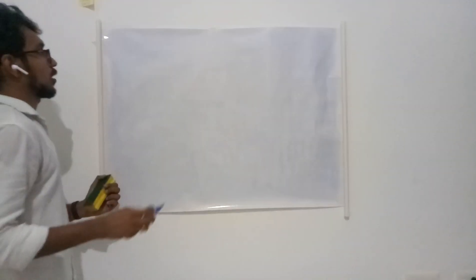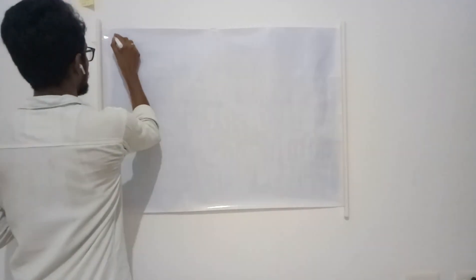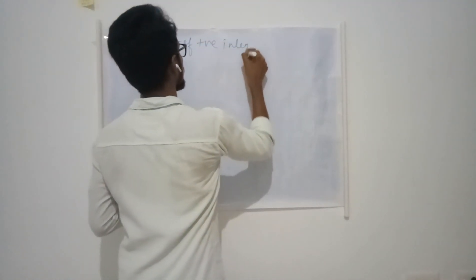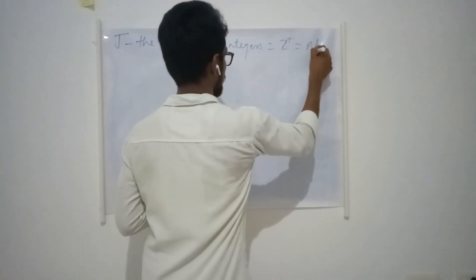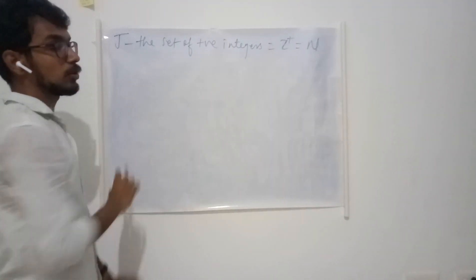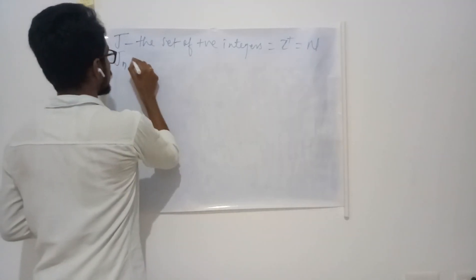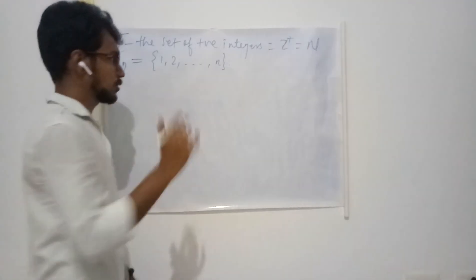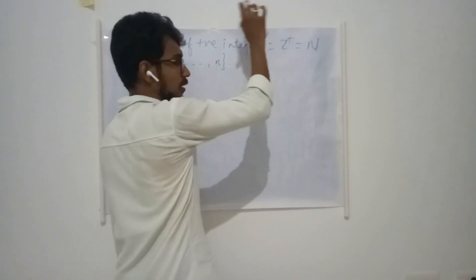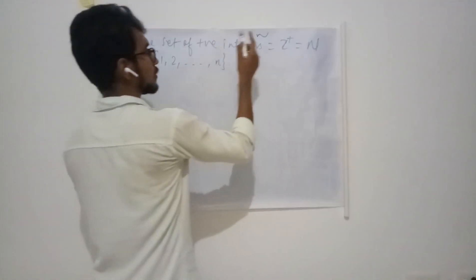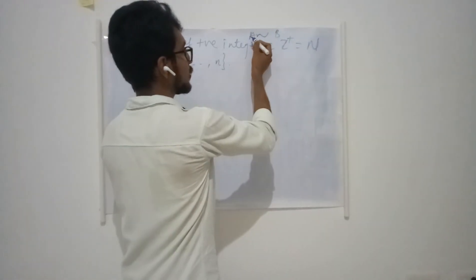Next we define something most used in the course of analysis. Let J be the set of positive integers. Usually we give the notation ℕ, but in our textbook — Walter Rudin's book — it is given as J. And J_n is the set consisting of {1, 2, ..., n}. The tilde symbol denotes that there is a one-to-one correspondence between the sets on either side: if we write A ~ B, this means there is a one-to-one correspondence between A and B.